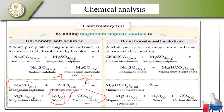The magnesium carbonate with hydrochloric acid gives us magnesium chloride, water, and carbon dioxide. Similarly, sodium bicarbonate with magnesium sulfate gives sodium sulfate and magnesium bicarbonate. The magnesium bicarbonate with hydrochloric acid also gives water and carbon dioxide.